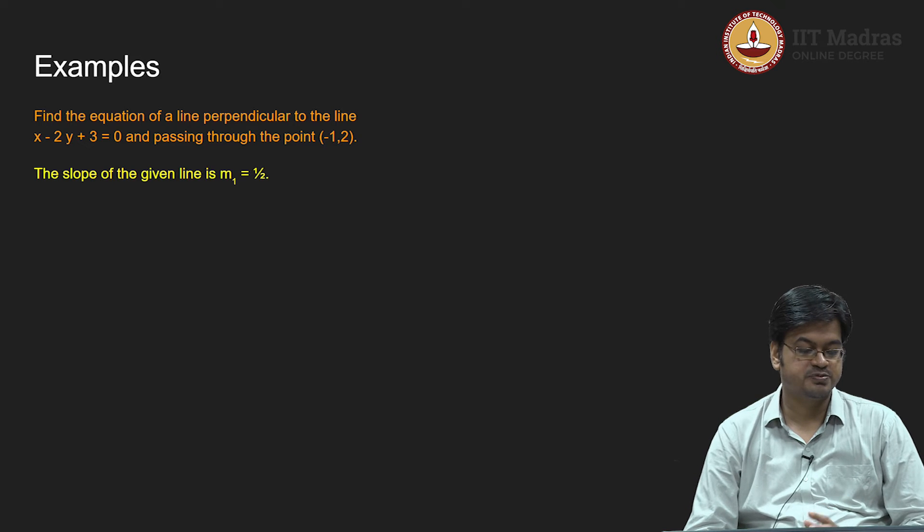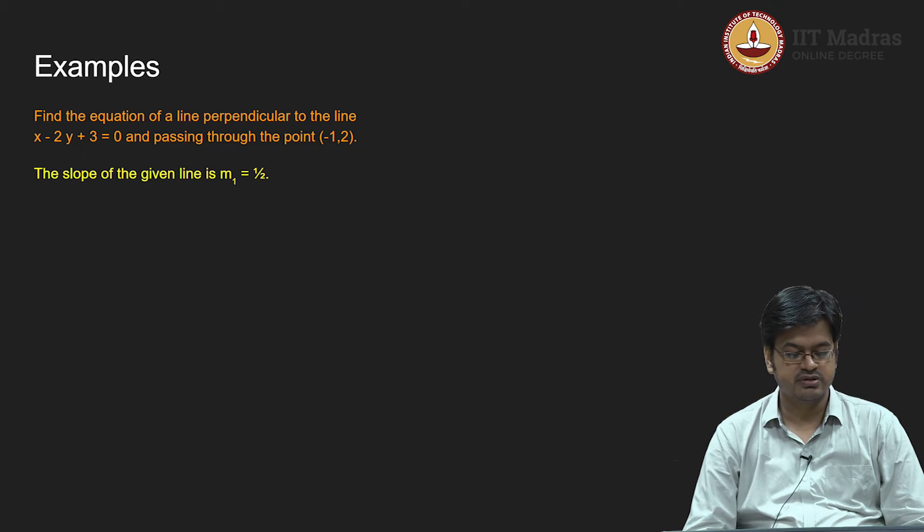Now, if a line is perpendicular to it, then you already know that the product of the slopes is minus 1.